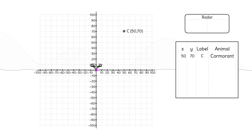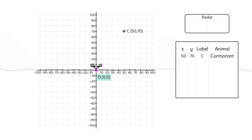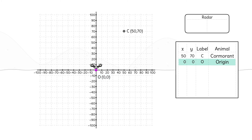What are the coordinates of the origin? The origin has the coordinates (0, 0), because if we are at that point, we don't move in the x- or y-direction. We'll call the origin point O and add it to our table.